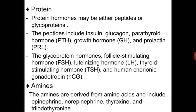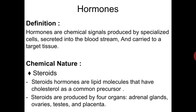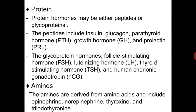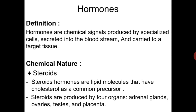Amines — we mean derived from amino acids. The amines are derived from amino acids and include epinephrine, norepinephrine, thyroxine, and triiodothyronine. So this covers the chemical nature of hormones: steroid, protein, or amine in nature.